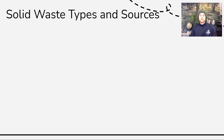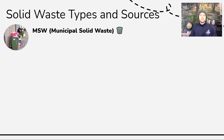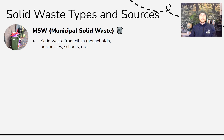We'll start out today by talking about what solid waste actually is, the different types, and the sources or where it comes from. The first term we need to know is MSW, which does not stand for Masters of Social Work in APES. It stands for municipal solid waste. This is just APES lingo for solid waste — garbage, trash, litter — all of those things that we throw away and don't think about.